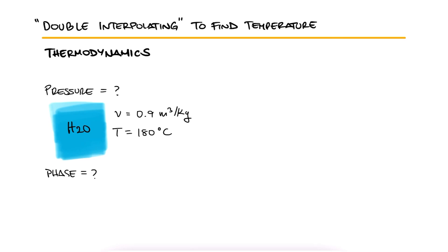This problem is very similar to the previous one, except we'll have to double interpolate for both the pressure and the temperature. We start by going to the saturated mixture tables to determine the phase of our substance, in this case the saturated mixture table by temperature.